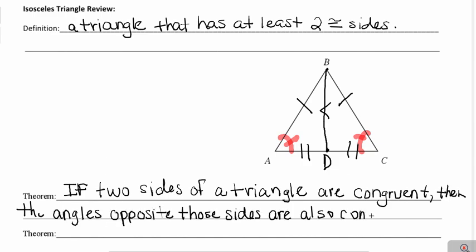Now, will the reverse of this theorem also always be true? Yes. So we can also include that as a reason in a proof, depending on what we're given. So if two angles of a triangle are congruent, then the sides opposite those angles are also congruent. So keep that in mind, that the reverse of this also will work.